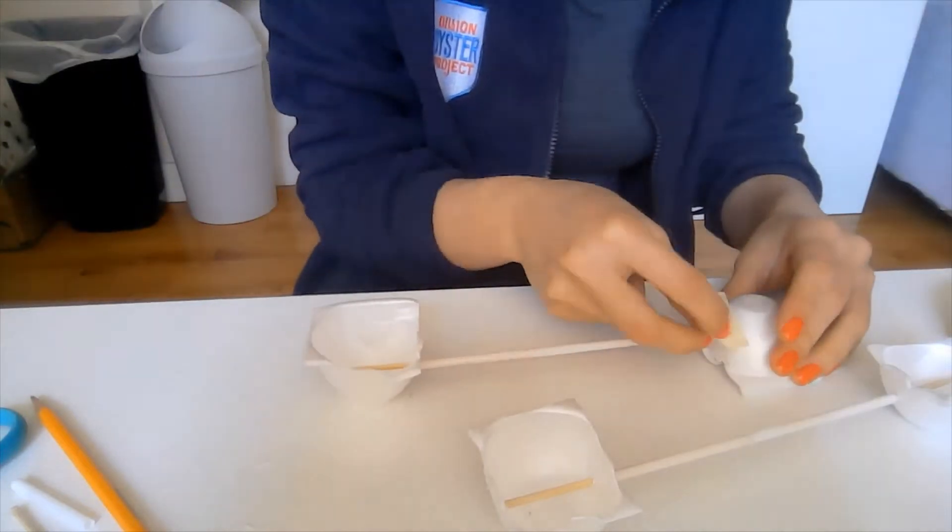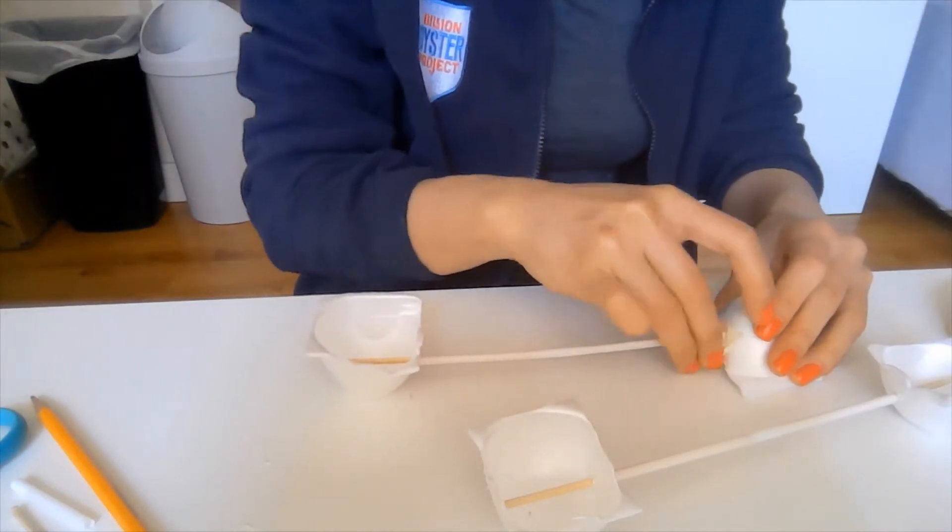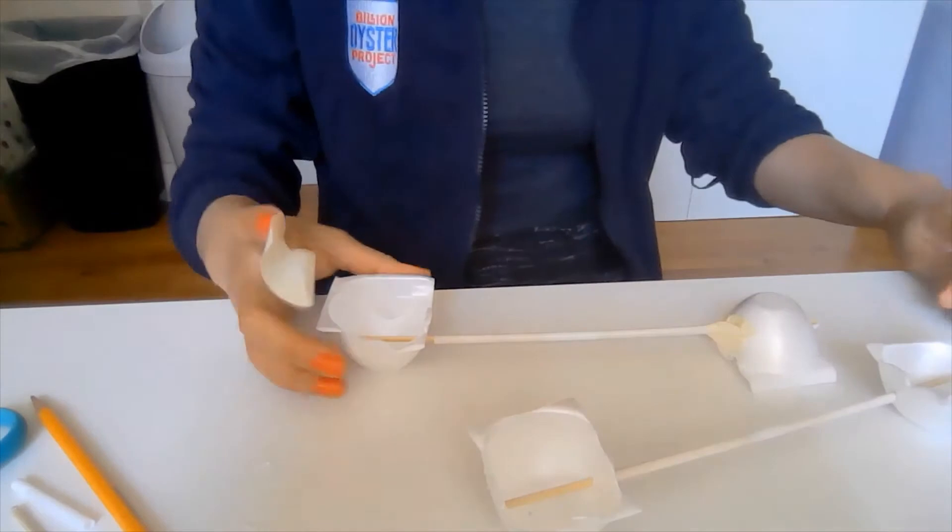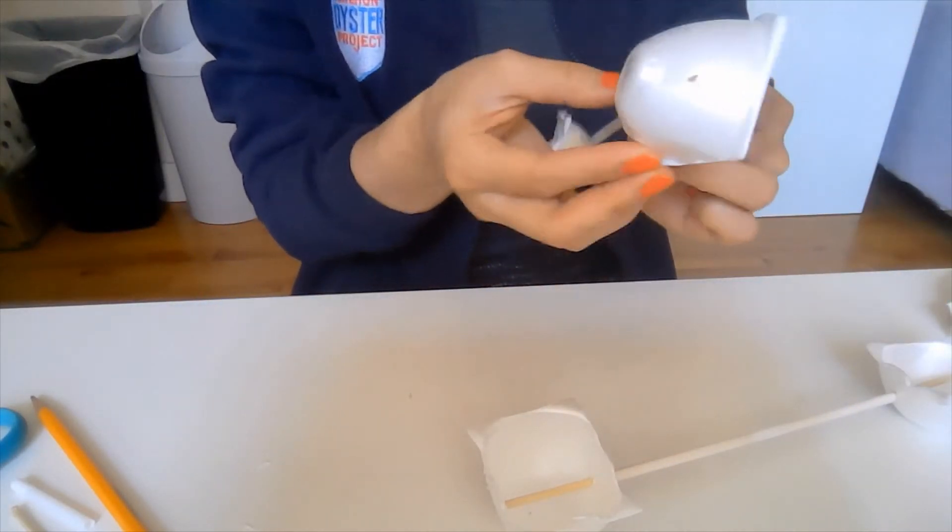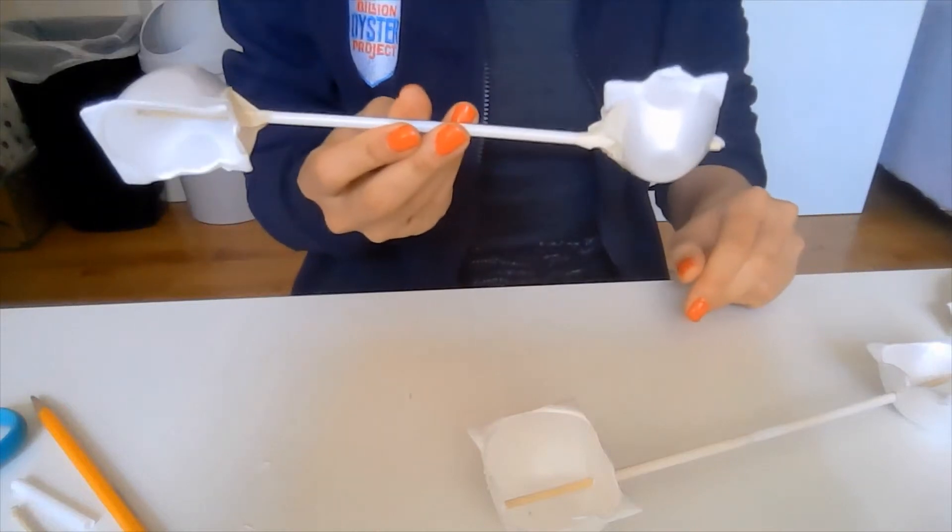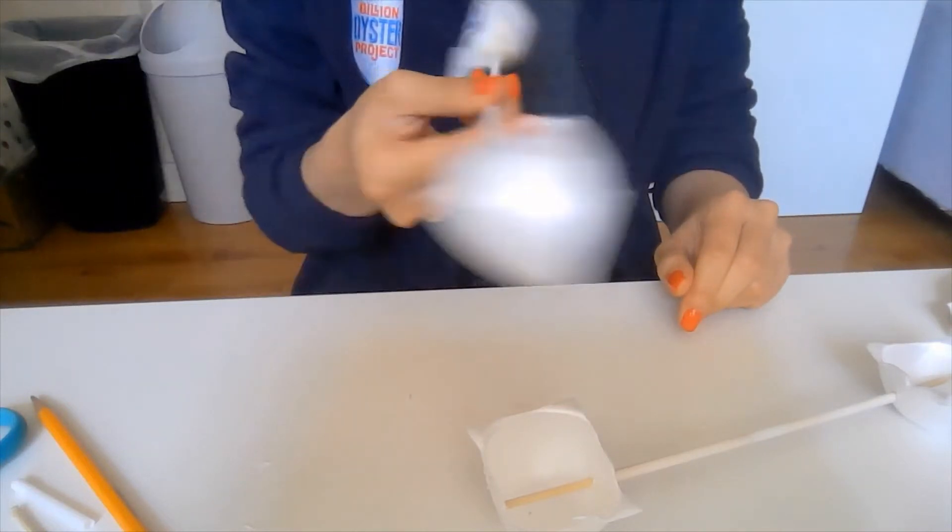Next, take some tape to secure the carton cups onto the straw. You want to make sure that the egg carton cups on each straw face opposite directions. This is a very important detail when making your anemometer. Repeat with the other straw.